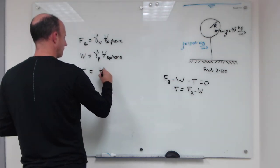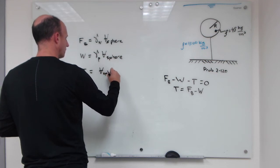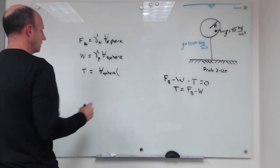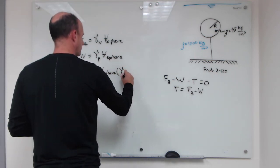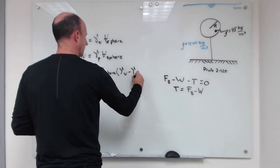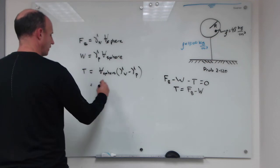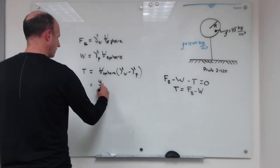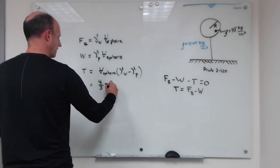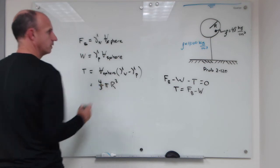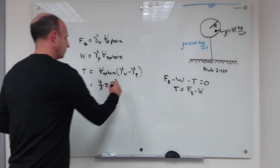times the unit weight of water minus the unit weight of plastic. And if you work out the volume of the sphere, four-thirds pi r to the cubed power, unit weight of water and plastic.